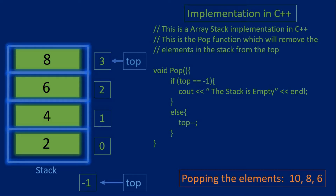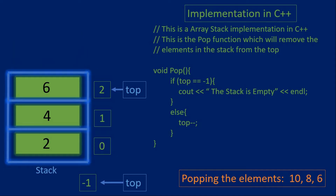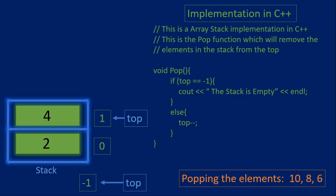If we call pop again, the top variable is currently at three and since we have elements in the stack, we decrement the top variable and the element eight will be removed. We can do this again — with top at two, we can remove the element six by decrementing the value of the top variable. The if statement will be executed if the value of top is negative one, meaning the stack is empty. Now we can move on to the peek function.